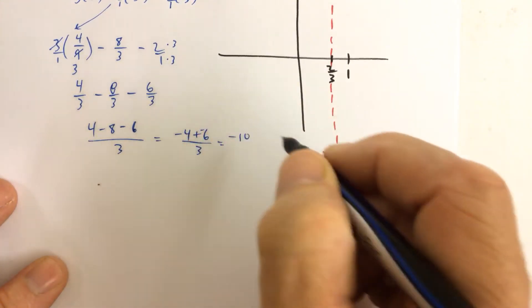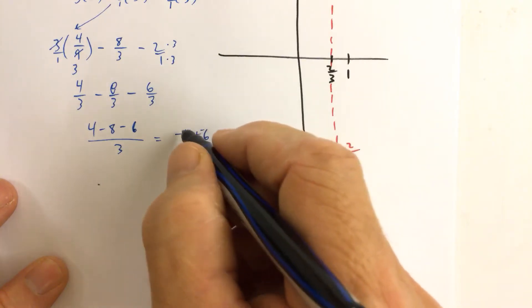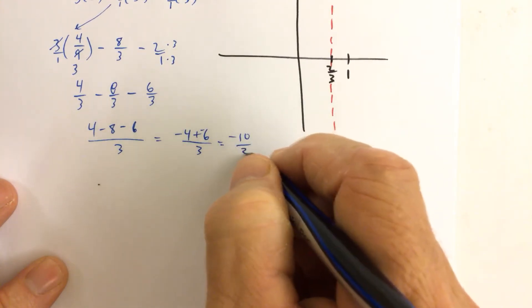4 minus 8 is negative 4 minus 6 all over 3. And negative 4 minus 6 is negative 10, because negative 4 plus negative 6. So negative 4 minus 6 is the same as negative 4 plus negative 6. That's negative 10 over 3.